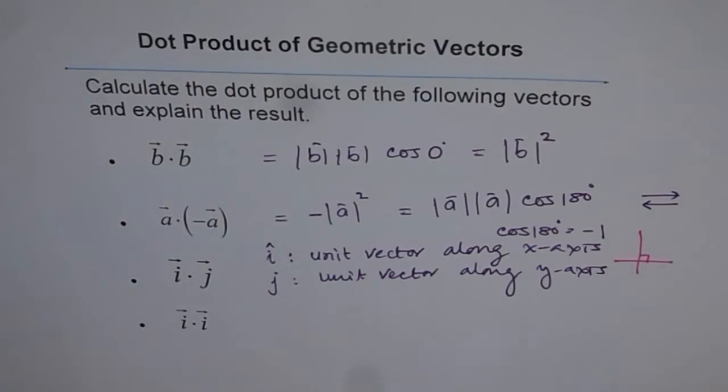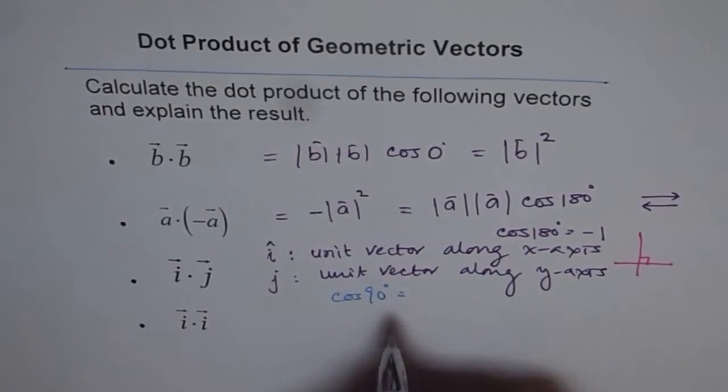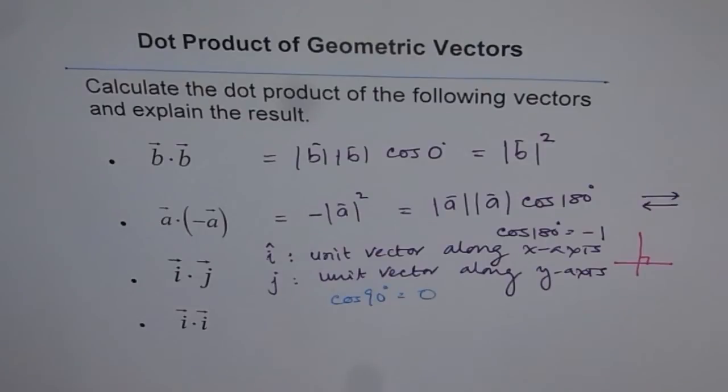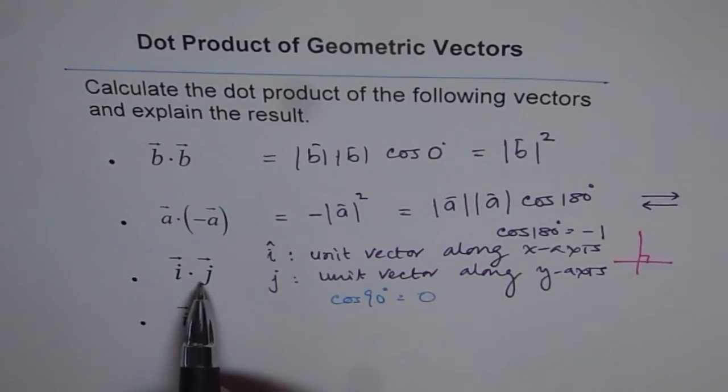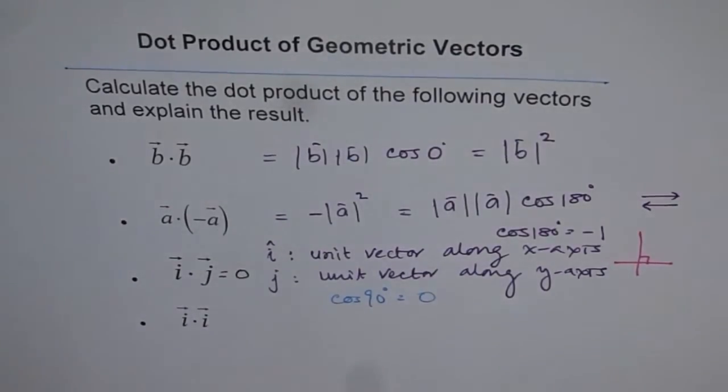So if the angle is 90 degrees, what is cos of 90? Cos of 90 degrees is 0, therefore the dot product will be 0. So you will get dot product of unit vector i and unit vector j will always be 0.